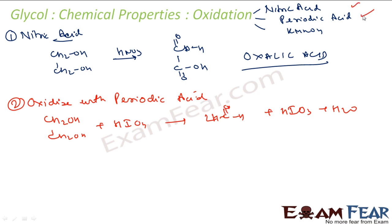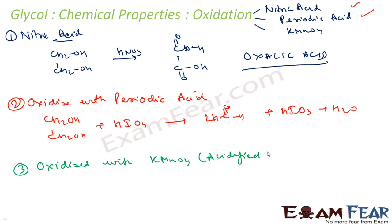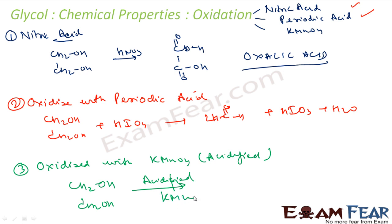The third oxidation condition is acidified KMnO4. When CH2OH-CH2OH is oxidized with acidified KMnO4, what we get is a carboxylic acid product. The output is different depending on which oxidizing agent we use — nitric acid gives oxalic acid, HIO4 gives formaldehyde, and acidified KMnO4 gives a carboxylic acid.